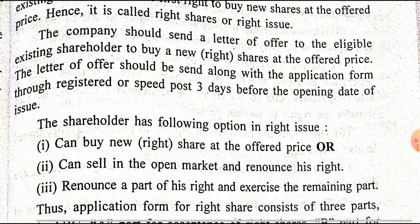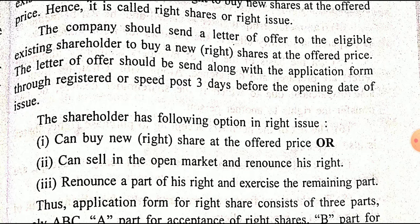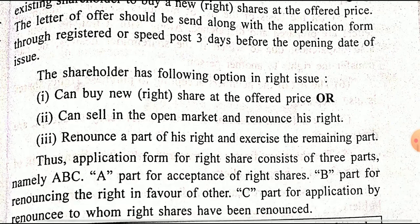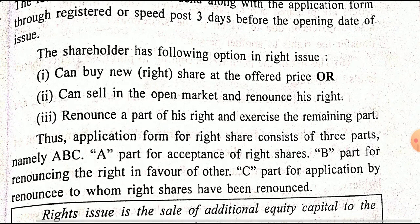Shareholders have the following options in a right issue: they can buy new shares at the offered price, they can sell the right in the open market, or they can renounce their right. Renounce means to forego or sacrifice the right. A shareholder can also renounce part of the right and exercise the remaining part — for example, sell half shares and keep the other half. The application form for right issue consists of three parts: Part A means acceptance of right, Part B means renouncing the right in favor of another person, and Part C identifies to whom the right has been renounced.